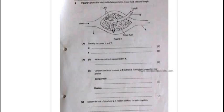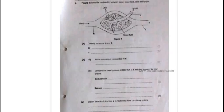Question 4 reads, figure 4 shows the respiratory between blood, tissue fluid, cells and lymph. We have our diagram here. Question 4 says, identify structure U and T. This is structure U and this is structure T.